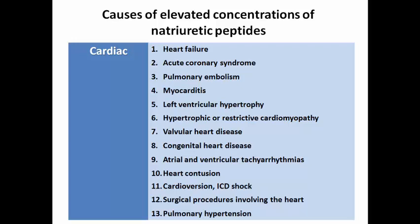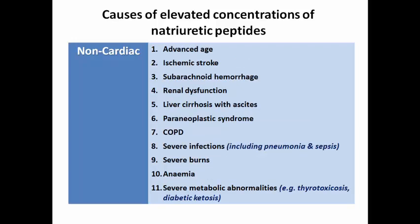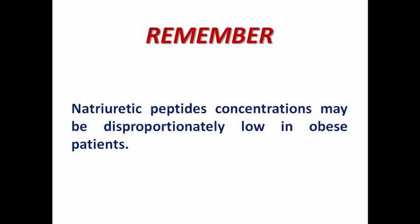Natriuretic peptides are elevated in non-cardiac conditions as well, including advanced age, stroke, subarachnoid hemorrhage, renal dysfunction, liver cirrhosis, paraneoplastic syndrome, COPD, sepsis, burns, anemia, thyrotoxicosis, and diabetic ketosis. So heart failure is not the only culprit. Also remember that natriuretic peptide concentration may be disproportionately low in obese patients — a heart failure patient with clinical decompensation who is obese may have normal natriuretic peptide levels, so don't be deceived by that low level.